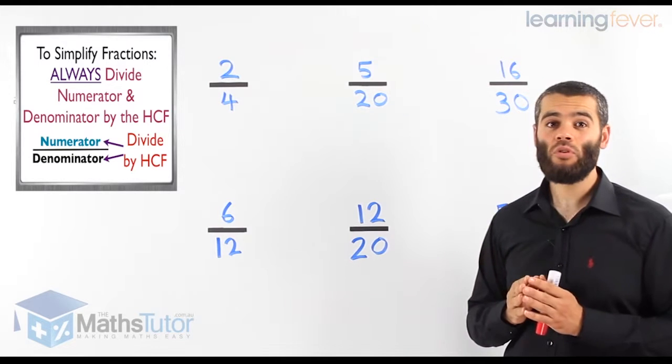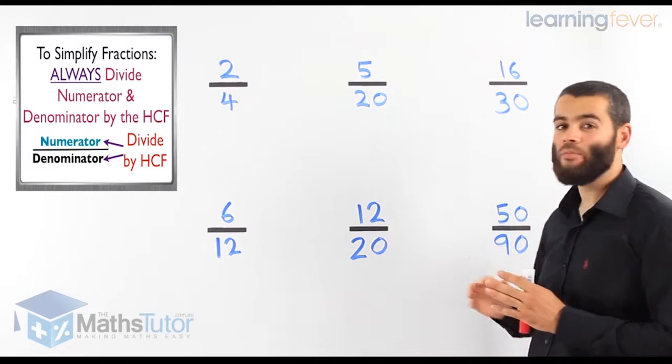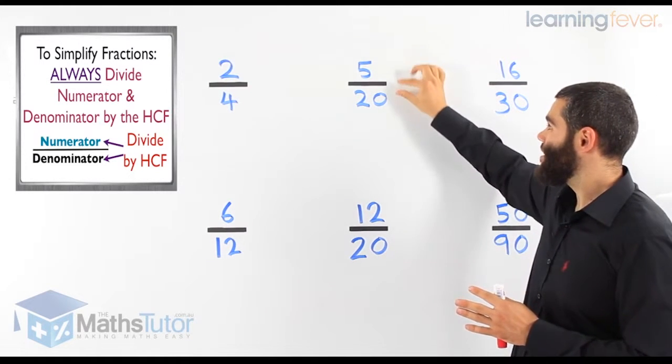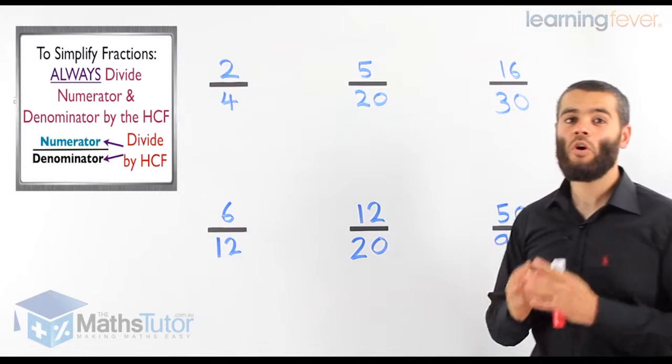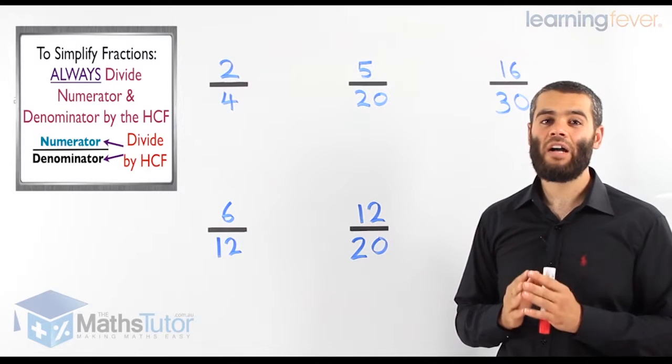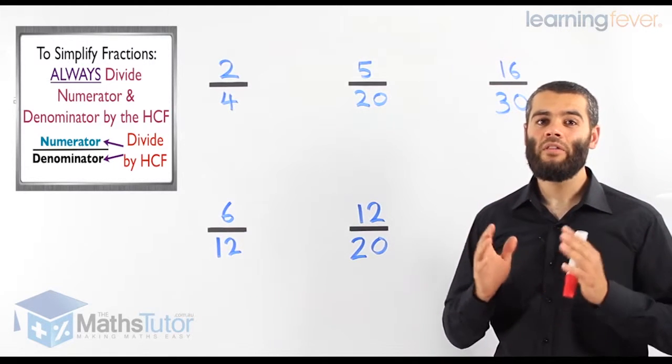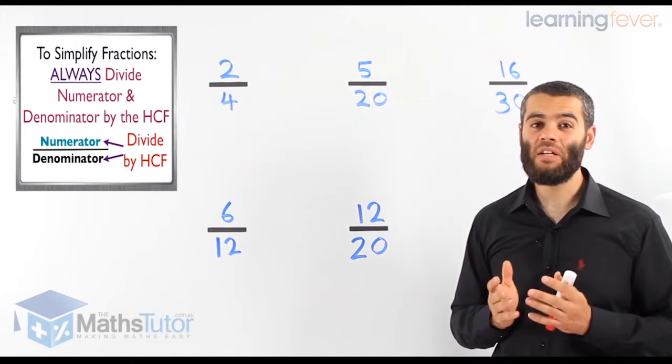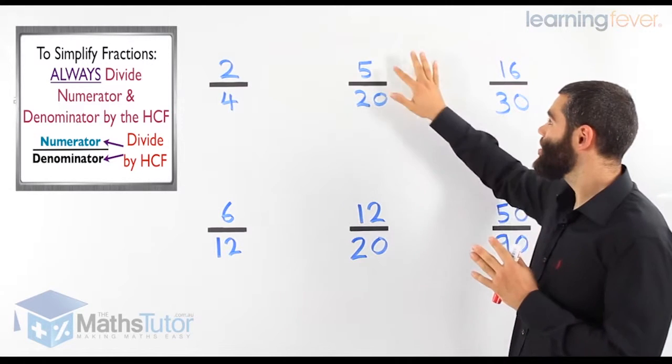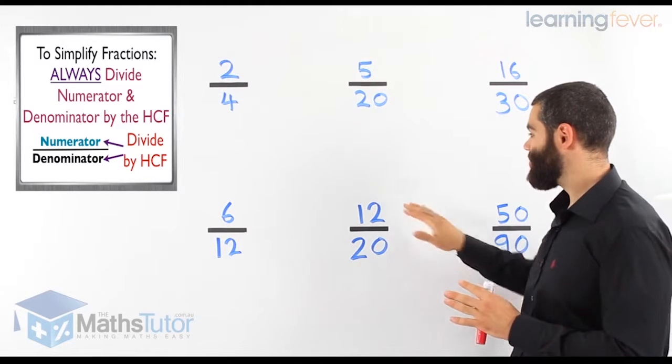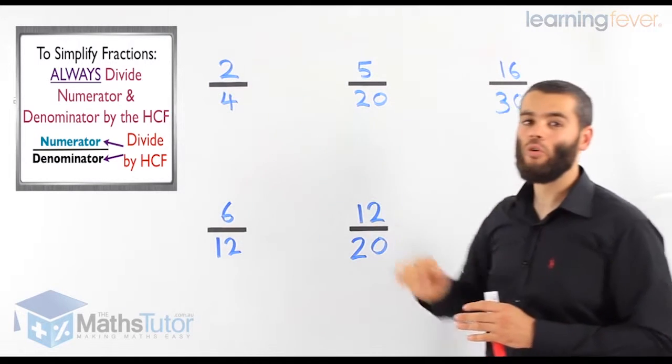So the theory says the rule is, we have to divide both the numerator and the denominator by the HCF. We have to divide that and that by the HCF for all fractions. To simplify, you must divide the numerator and the denominator by the HCF. Now remember, HCF stands for the highest common factor, meaning the highest factor that is in the numerator and in the denominator. The highest factor that is found in 12 and in 20, in 6 and in 12, in 2 and in 4, etc.